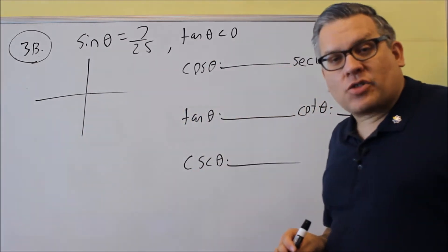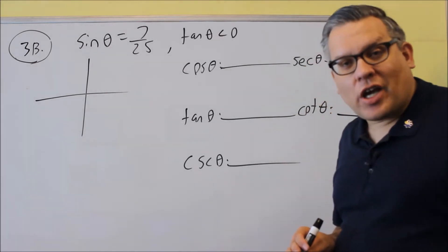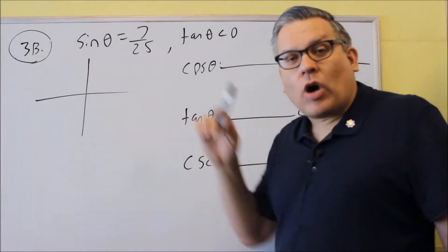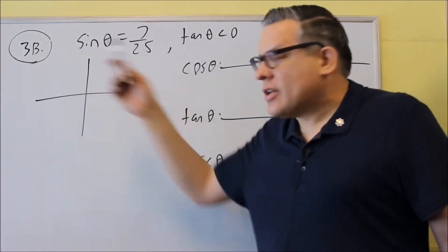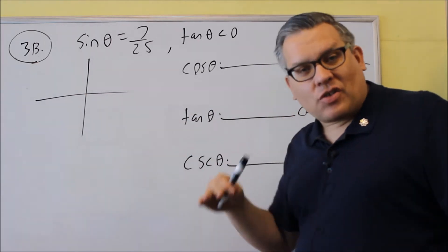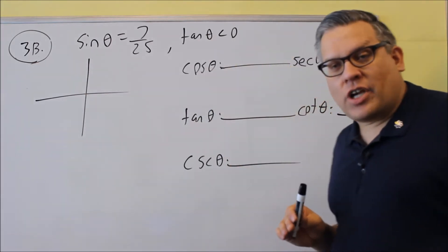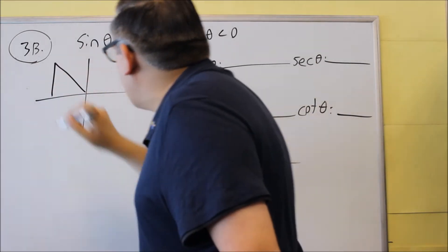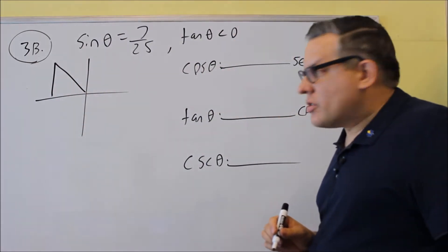Next one, we have students. S means sine is positive, everything else is negative. So this is actually the quadrant that's going to work because sine would be positive in the second quadrant. Everything else has to be negative including tangent. So tangent has to be negative there. So we need to draw the triangle in the second quadrant this time.